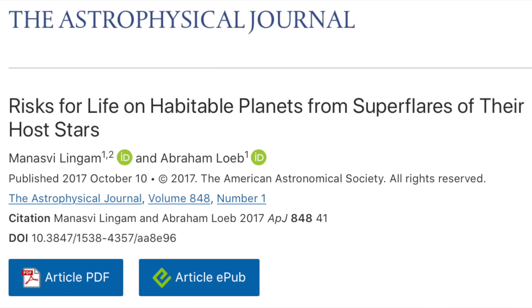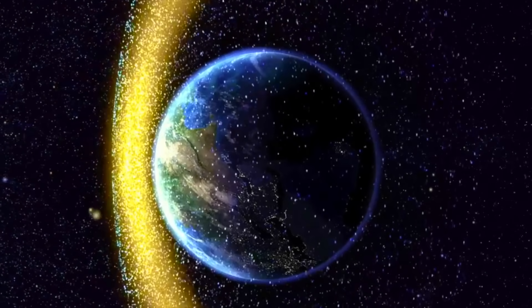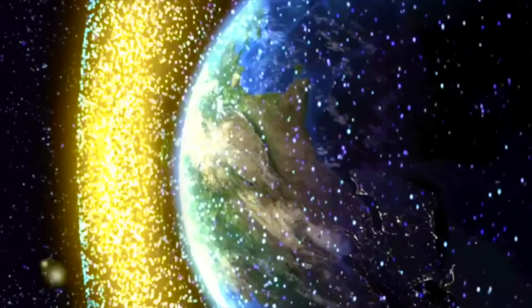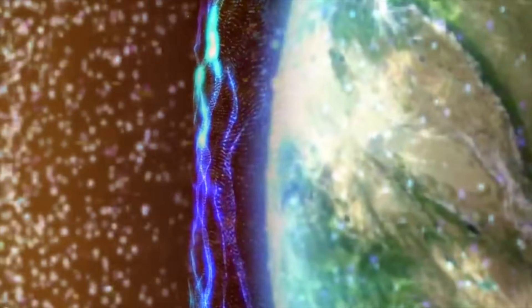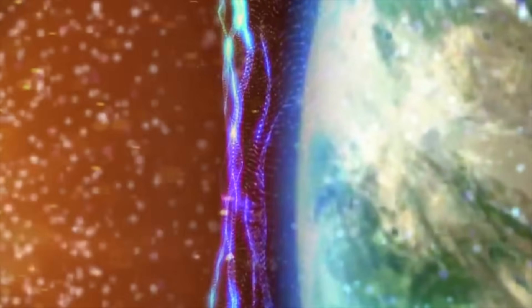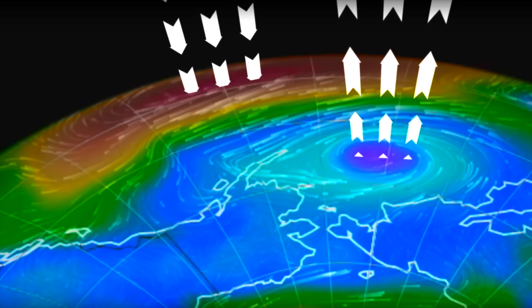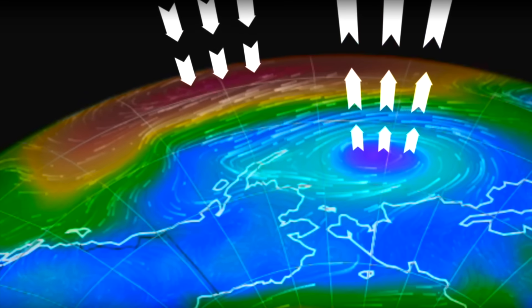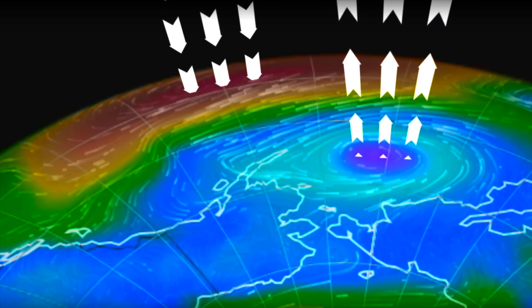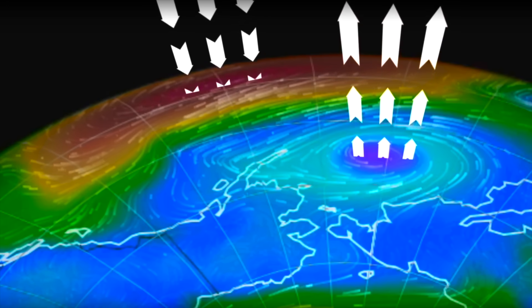There are two ways that inclement solar activity increases atmospheric temperature. The first is a direct particle injection and excitement from the impact, which transfers from the ceiling of the global electric circuit in the ionosphere down through the atmospheric pressure cells — that would be the vertical component of the global electric circuit.